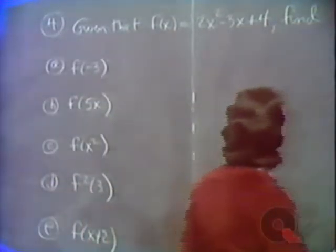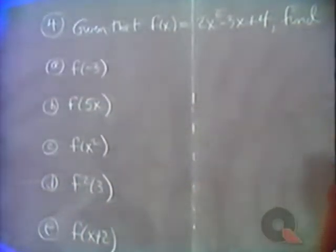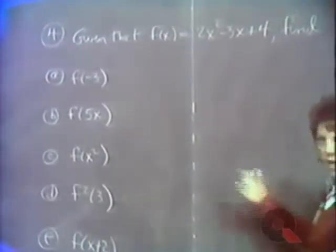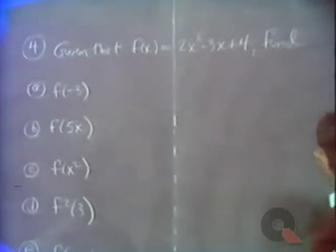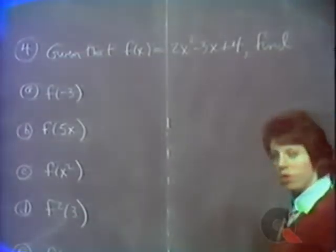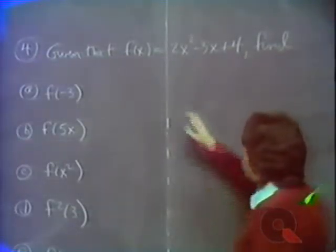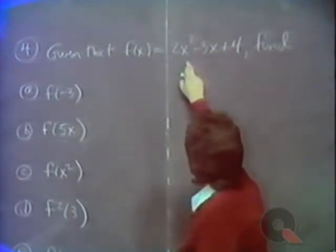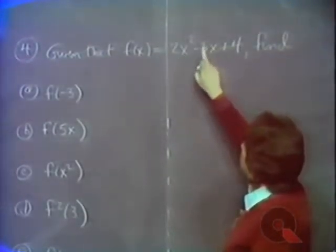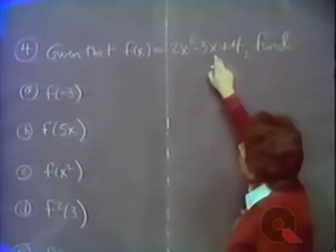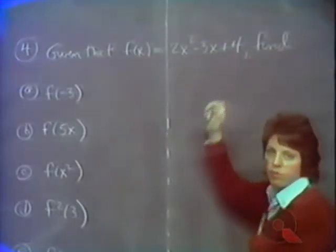It's helpful to figure out what this function does. This function has one job: you give it a number, it squares it, doubles it, subtracts 3 times the number, and adds 4. It always does the same thing.